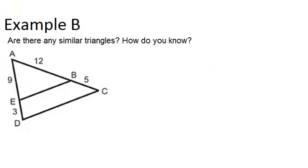Let's look at example B. Are there any similar triangles? How do you know? So in this picture, there are two triangles, and maybe they're similar, maybe they're not. The triangles are A, E, B—that's one triangle—and then the other triangle is the big triangle, A, D, C.